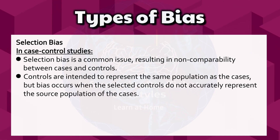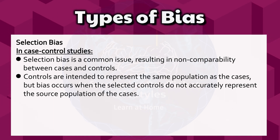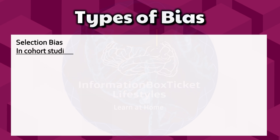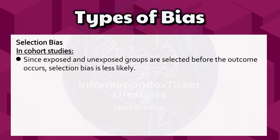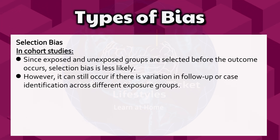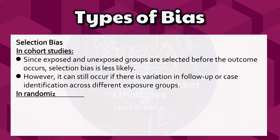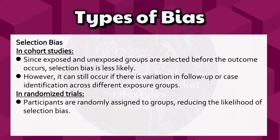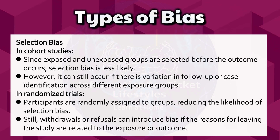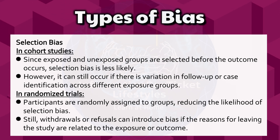Controls are intended to represent the same population as the cases, but bias occurs when the selected controls do not accurately represent the source population of the cases. In cohort studies, since exposed and unexposed groups are selected before the outcome occurs, selection bias is less likely. However, it can still occur if there is variation in follow-up or case identification across different exposure groups. In randomized trials, participants are randomly assigned to groups, reducing the likelihood of selection bias. Still, withdrawals or refusals can introduce bias if the reasons for leaving the study are related to the exposure or outcome.